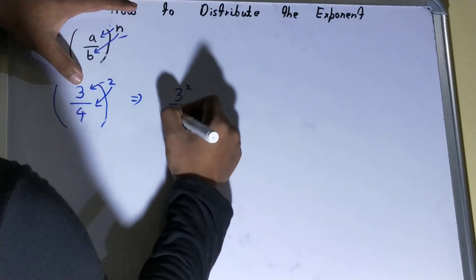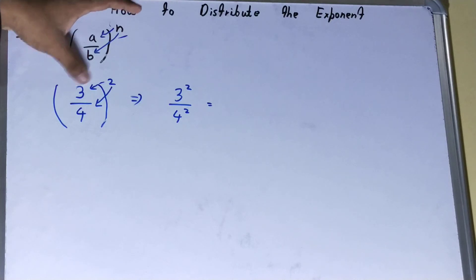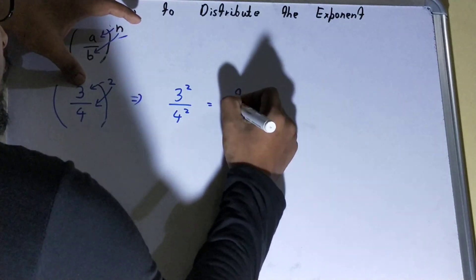Right, quite easy. You just need to give this exponent to each of the terms inside the bracket. So it will be 9 and it will be 16, and that will be your answer.